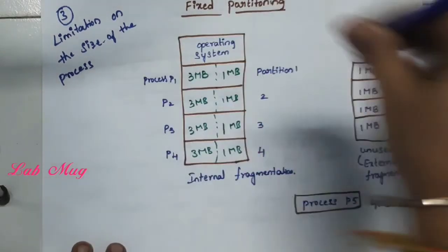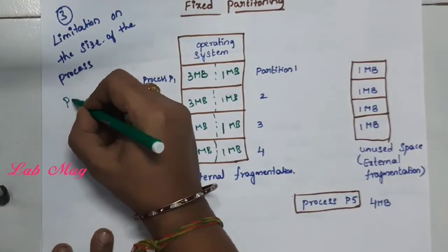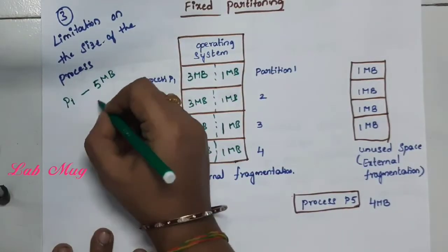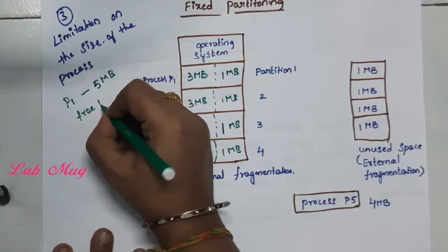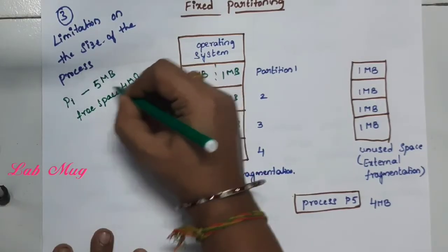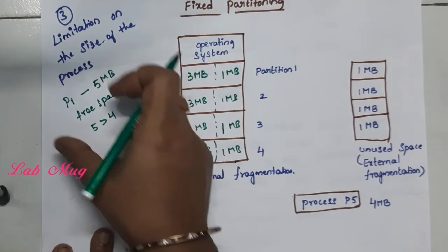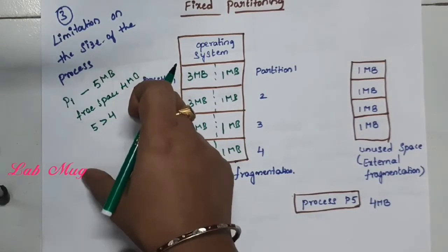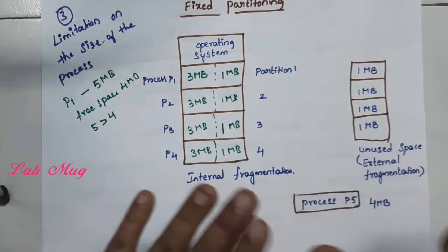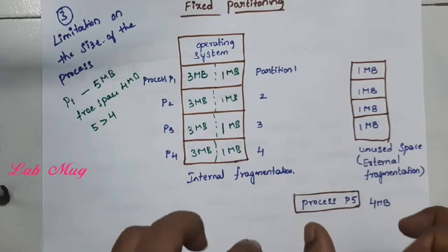Again, a small diagram: P1 wants 5MB of memory, but the already free space is 4MB. This 5MB is greater than 4MB. So this process cannot be executed by the memory — it cannot be loaded into that memory. That is the limitation on the size of the process.